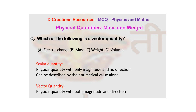So the question is: which of the following is a vector quantity? The options are electric charge, mass, weight, and volume. For all those who know what a vector quantity is, you can pause the video, answer the question, and then resume watching, because the answer will be given later.